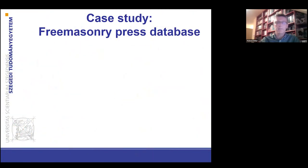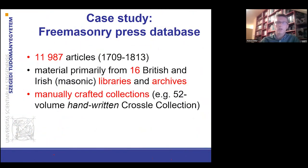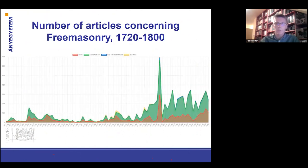Let's move on to the case study that draws on the different representations of Freemasonry in 18th century British and Irish press. The database contains almost 12,000 articles from different libraries and archives. When I first visualized the distribution of Masonic-related articles that you can see on this graph, I was very astonished because, as you can see, there is a peak in 1781. I could not explain what happened in this given year in the history of British and Irish Freemasonry.